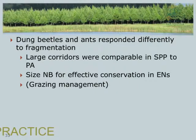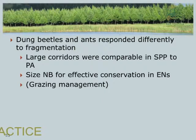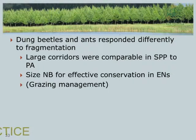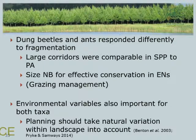Dung beetles and ants responded differently to fragmentation, but both taxa in large corridors were comparable in species richness to the protected area, stressing the importance of size for effective conservation through ecological networks. Although we can actively manage dung beetle assemblages by including grazers not presently in the system, large corridors still contain the same number of unique species as the protected area, and mechanical grazing management does not seem to be detrimental. Environmental variables associated with environmental heterogeneity were also found to be important for both taxa, and future planning should take the natural variation in the landscape into account.